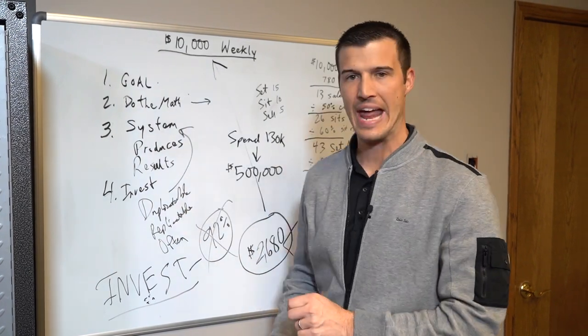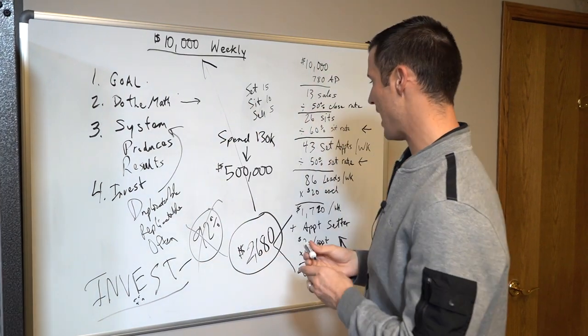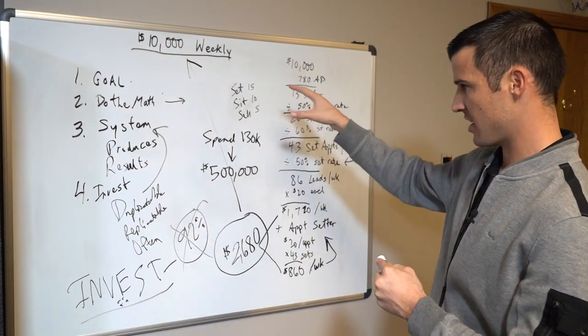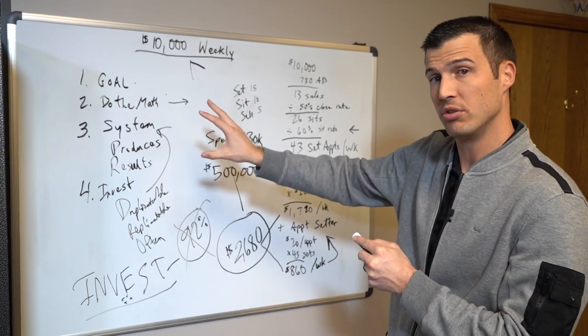So if you will set a goal, do the math, have a system, and then actually invest in your business, no matter what the goal is, it can happen. So what I would say is if you needed four steps to make this a reality, then this is how I've done it, how I would do it if I was you, and how you can earn ten thousand dollars weekly as a life insurance agent.